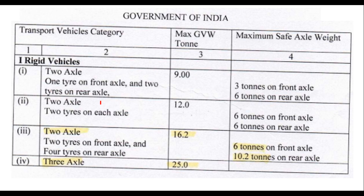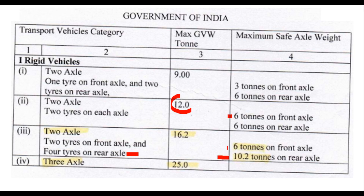For a two-axle vehicle with two tires on each axle, the safe maximum axle weight on each axle is 6 tons, giving a total gross vehicle weight of 12 tons. For a standard truck with two tires on the front axle and four tires on the rear axle, the rear axle load is 10.2 tons and the front axle 6 tons, giving a total gross vehicle weight of 16.2 tons.